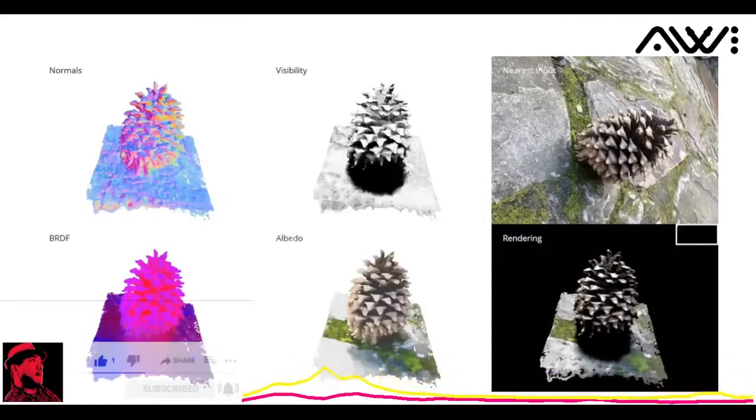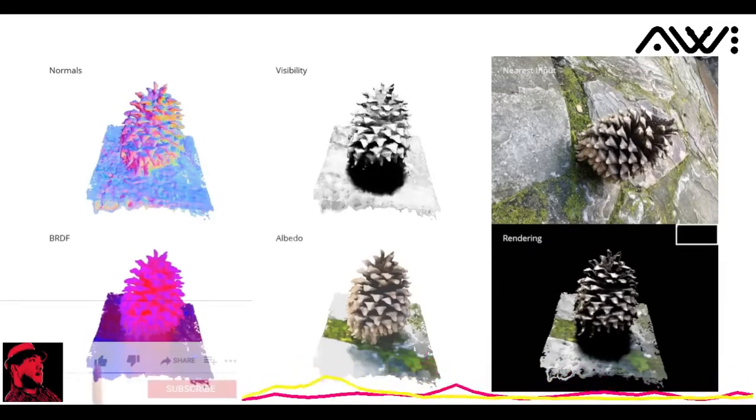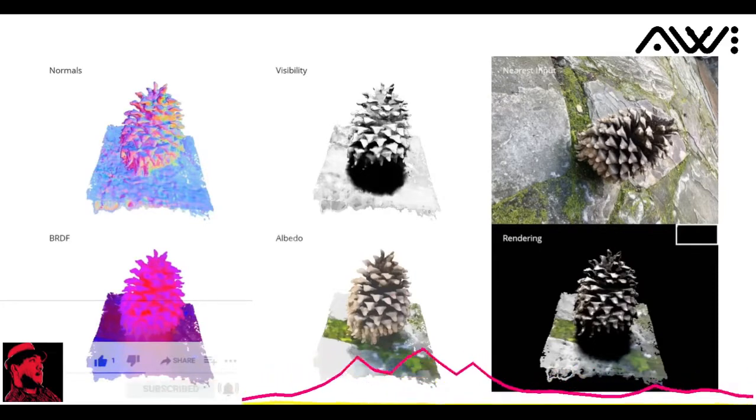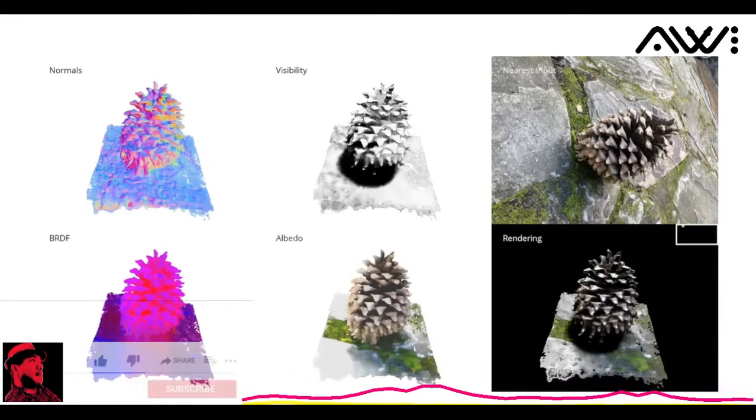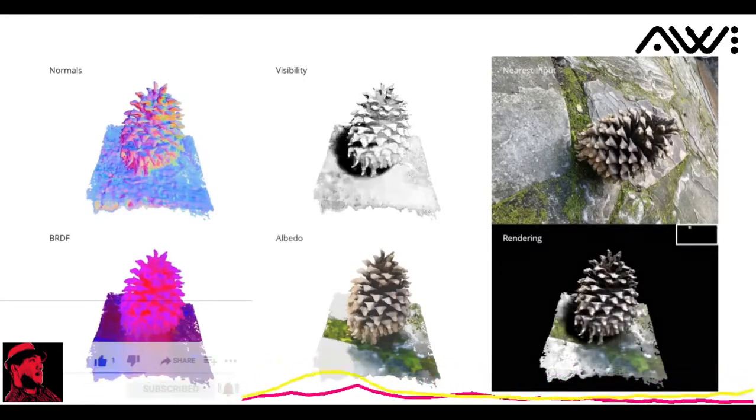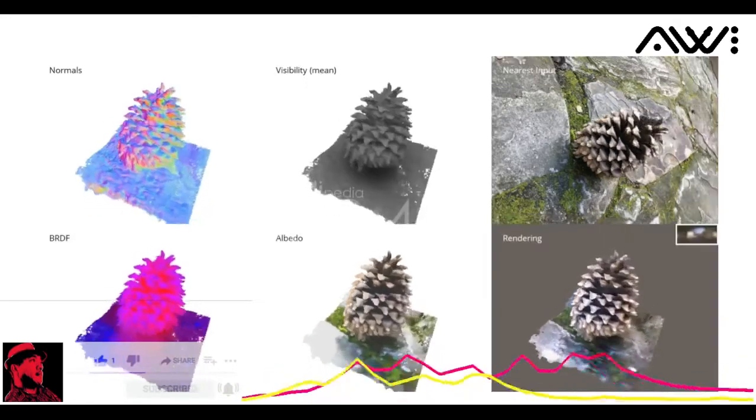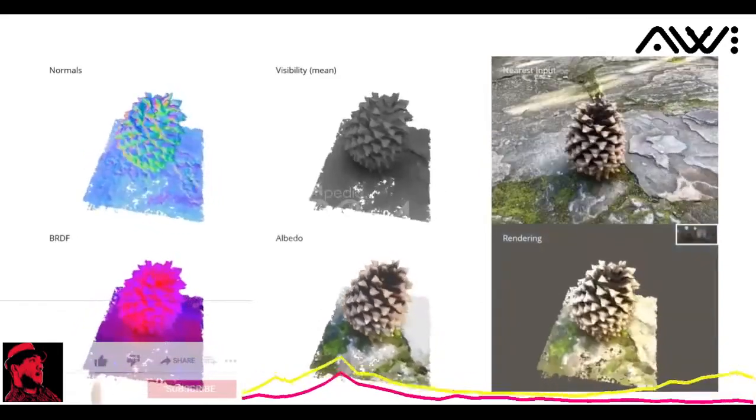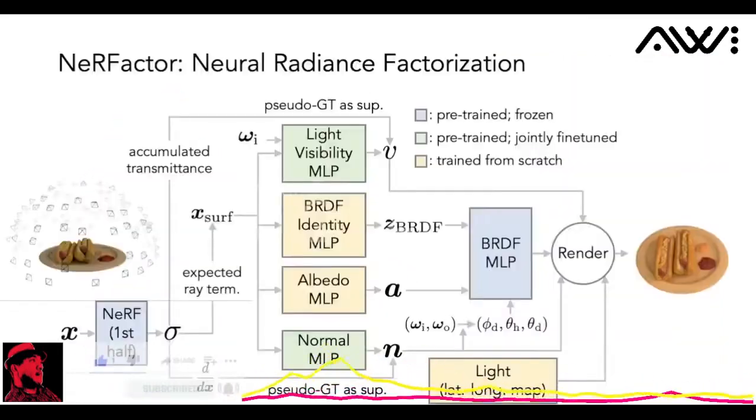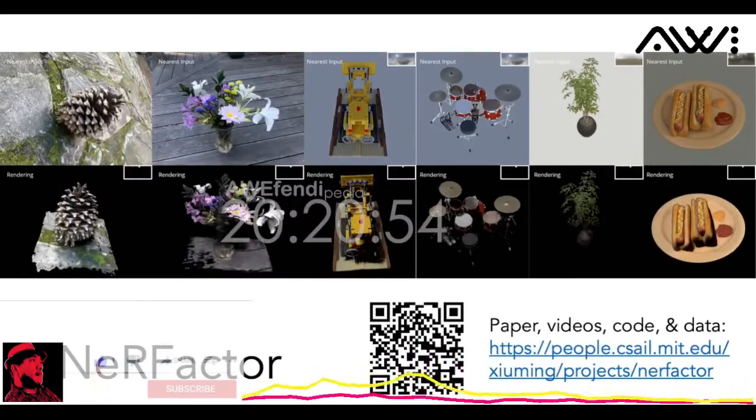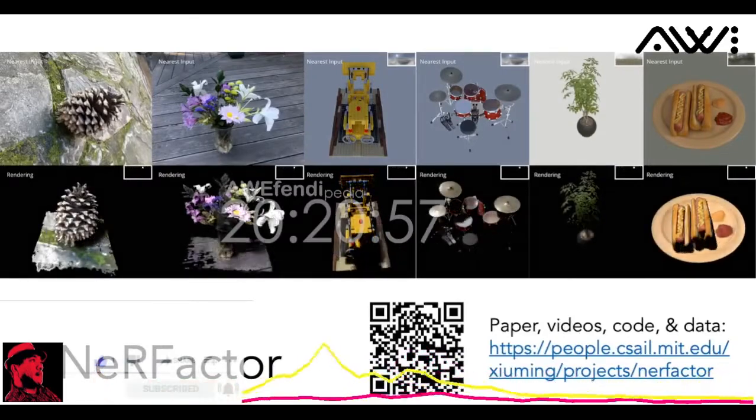Given a set of images and their camera poses, neural radiance factorization, or NeRF factor, decomposes the appearance into 3D fields of surface normals, light visibility, albedo, and spatially varying BRDFs. With this factorization, we can relight the scene with a single point light, supporting shadows, or relight the scene with an arbitrary light probe. We achieve this by building up on NeRF and factorizing the observed radiance into reflectance and lighting. Please check out the project page for the paper, videos, code, and data.